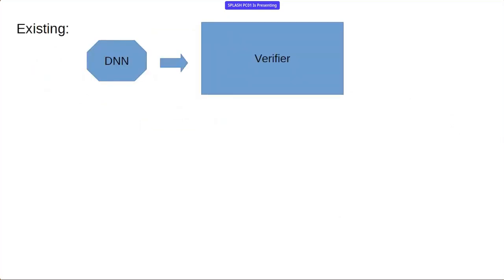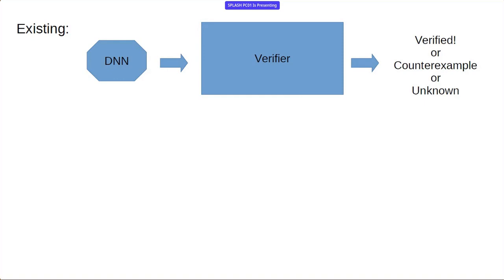Currently the way we think about neural network verification: you take your DNN, you plug it into a big verifier along with some spec, and it tells you verified — the plane is always going to turn away from the attacker — or it says the plane is going to go straight at it, which is a problem. Or it says timeout, I don't know what to do. That unknown is what we're trying to avoid.